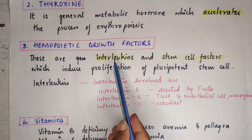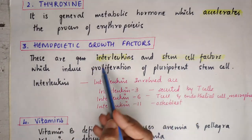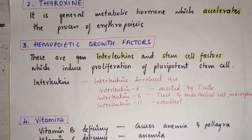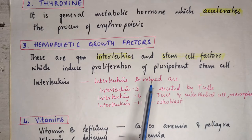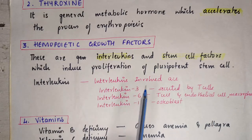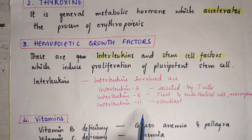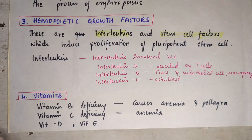The third general factor is hemopoietic growth factors, which include interleukins and stem cell factors. The interleukins induce proliferation of the pluripotent stem cell — the main cell from which erythrocytes originate. The interleukins involved are interleukin-3 (secreted by T cells), interleukin-6 (secreted by T cells, endothelial cells, and macrophages), and interleukin-11 (secreted by osteoblasts).